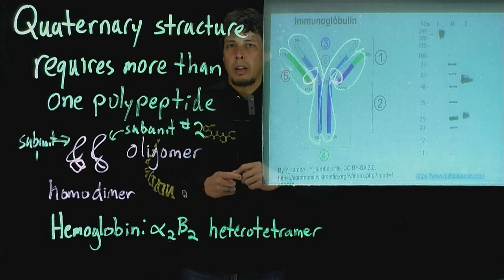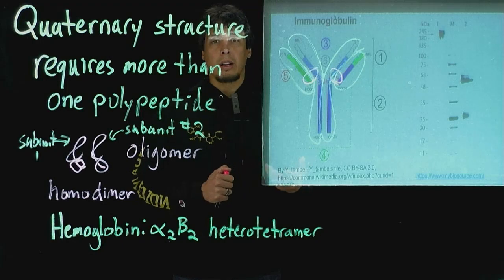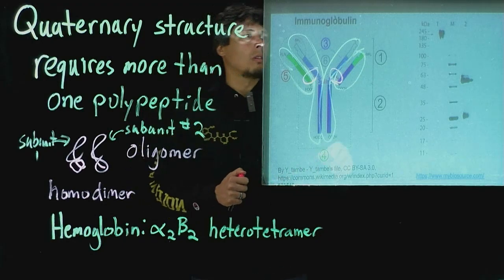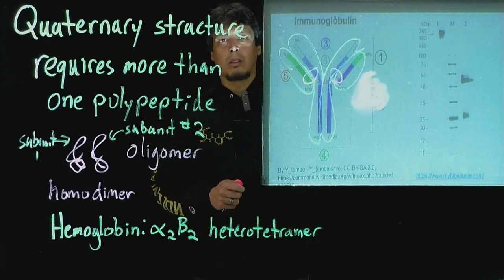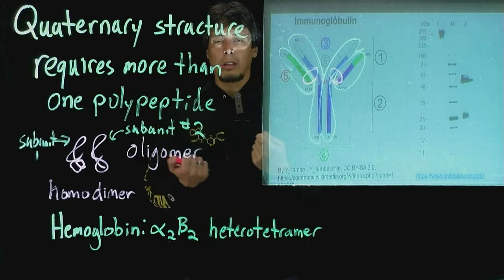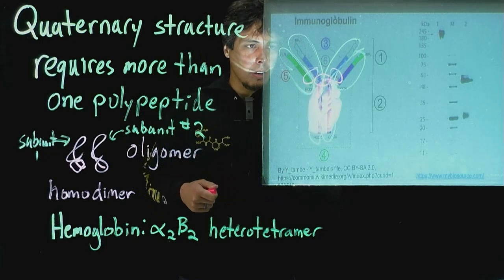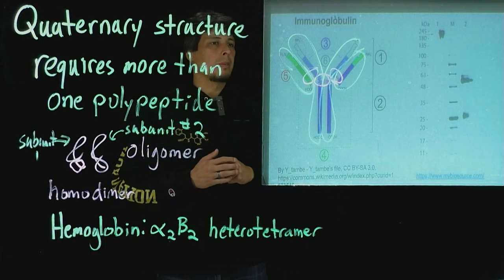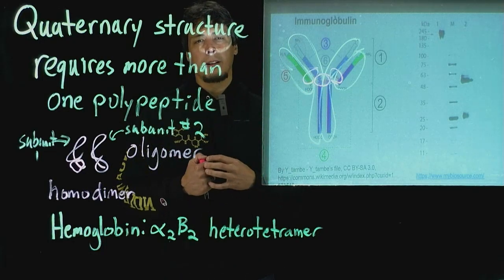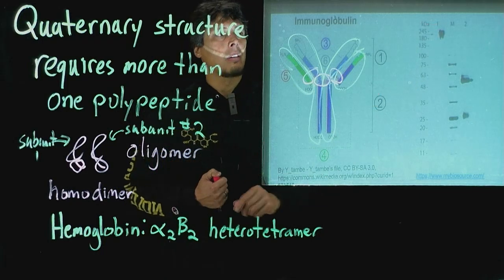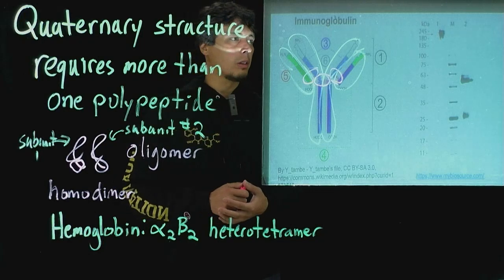If we don't add a disulfide reductant, what we see is that we get in the SDS page the molecular weight is consistent with the full length of the protein. That's because the small chain and the large chains can't covalently disconnect from each other. There's also a disulfide that links the two large chains. None of the peptides can separate from each other, so they all stay together and they have a large molecular weight above 200 kilodaltons.